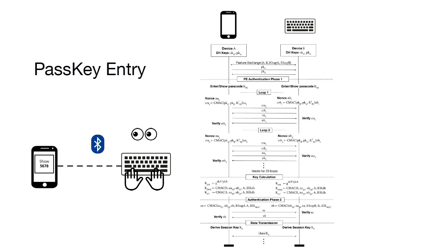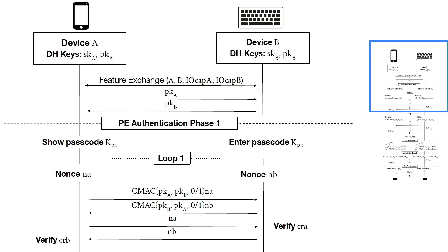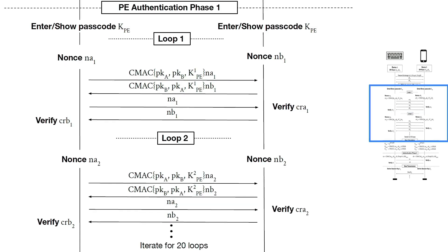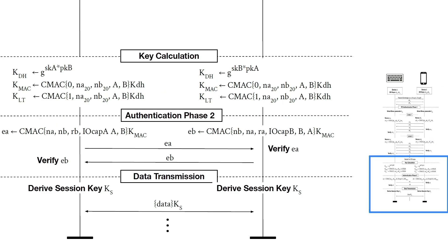Passkey entry has a similar structure, but the authentication phase is different. One device generates the passcode and the other device has to enter it. Because the passcode is 20 bits long, Bluetooth designs 20 different iterations to transmit each bit of the passcode per iteration, consisting of nonces and C-MAC of those values. This design of 20 iterations was made because Bluetooth wanted to harden the probability of an attacker compromising the security of passkey entry. The remaining phases — key calculation and authentication phase two — are the same as numeric comparison.